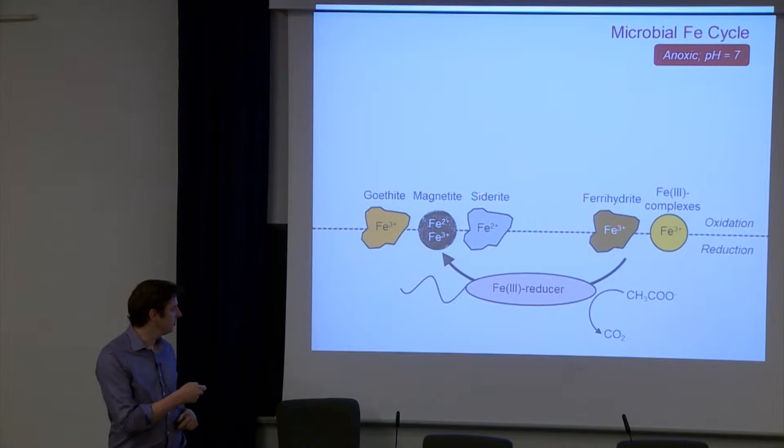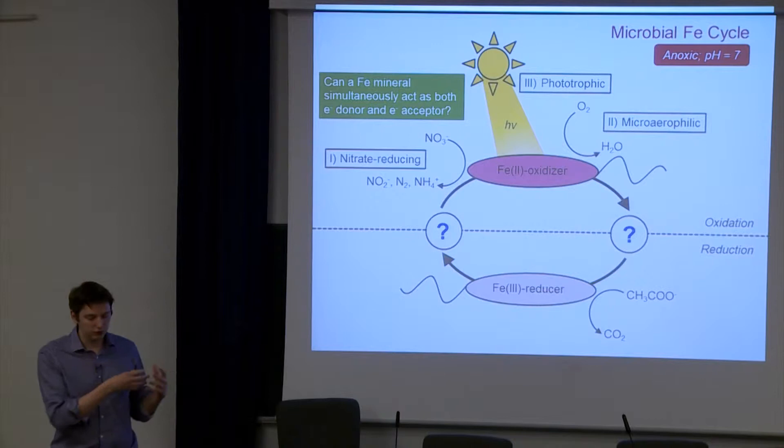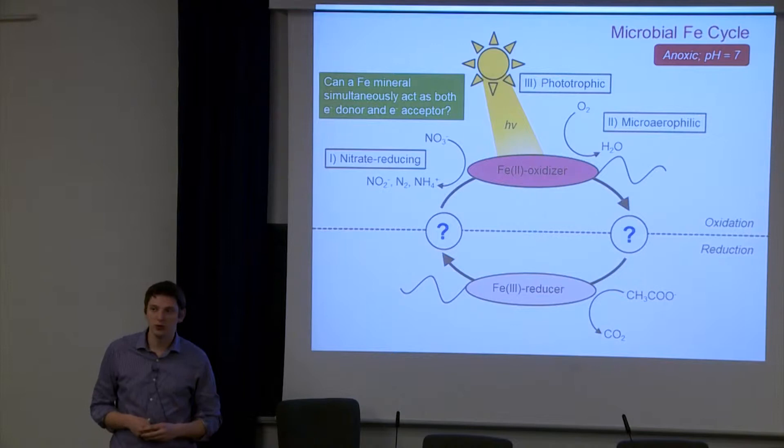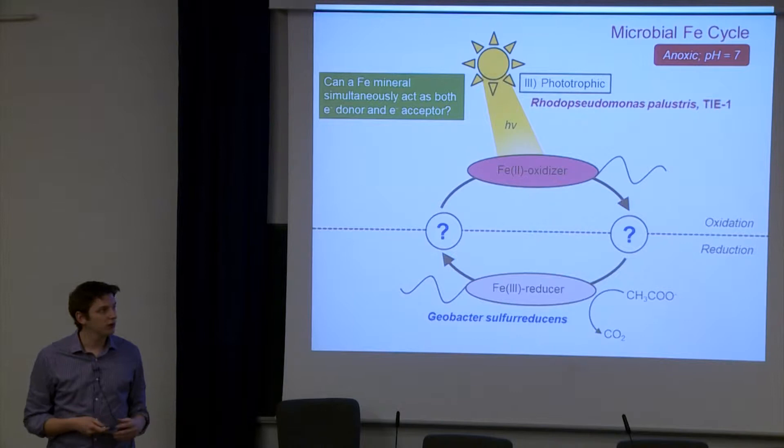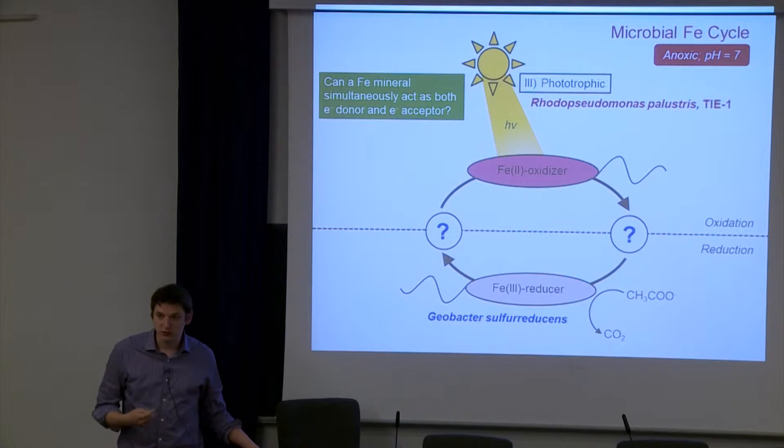Bearing that in mind, the questions and the reason why I was thinking of this particular field of research is to understand whether there's any minerals that can support both iron oxidation and iron reduction. Basically, whether it can act simultaneously as an electron donor or an electron acceptor. For this, I focused on two different strains, the phototrophic bacteria Rhodopseudomonas palustris TIE-1, and the iron reducing bacteria Geobacter sulfurreducens. The mineral I'm considering is magnetite.